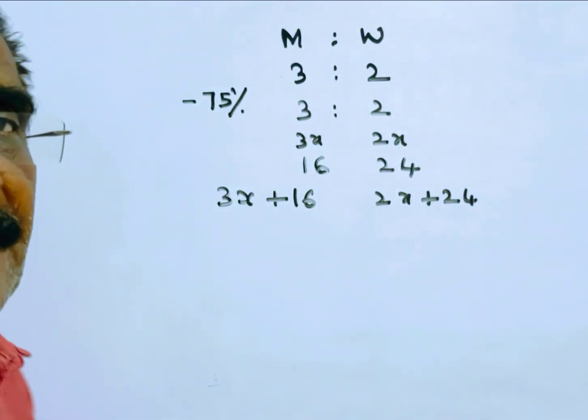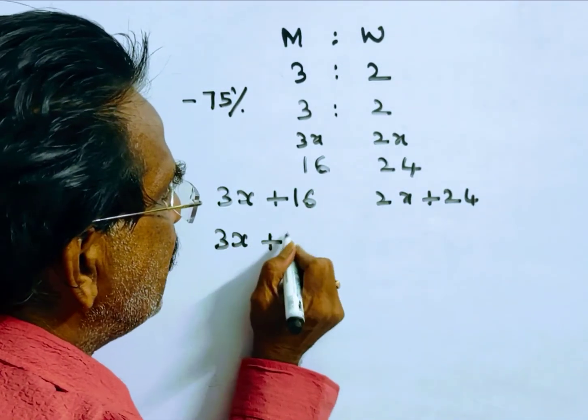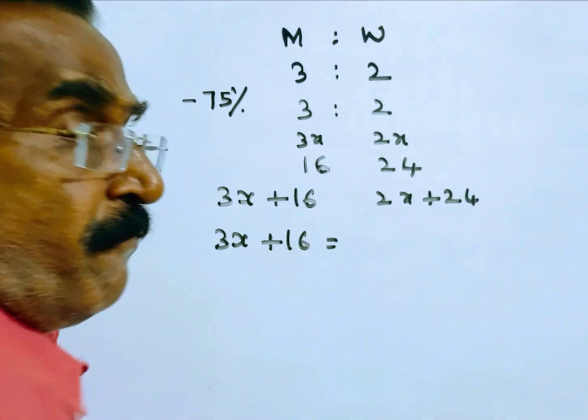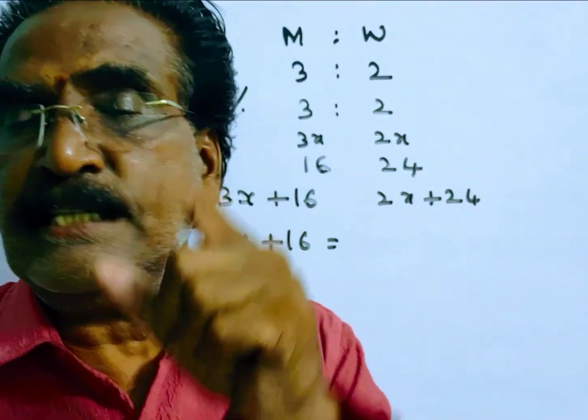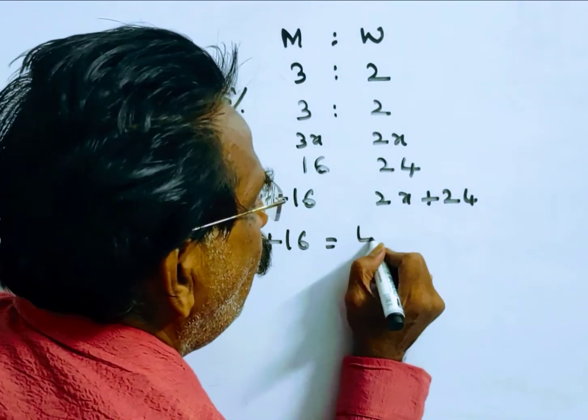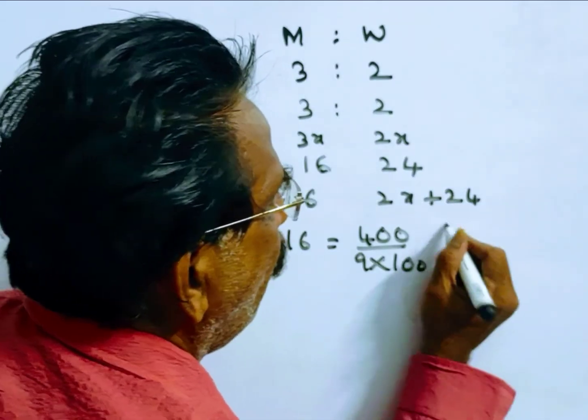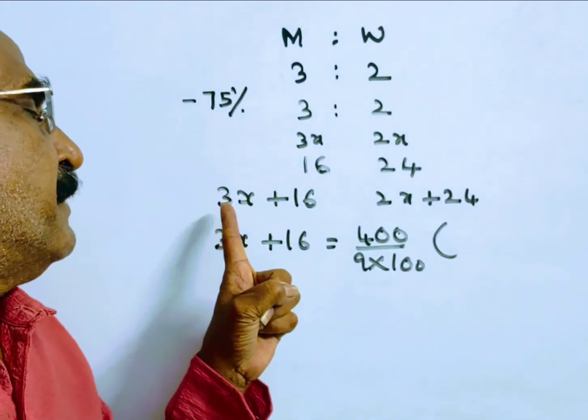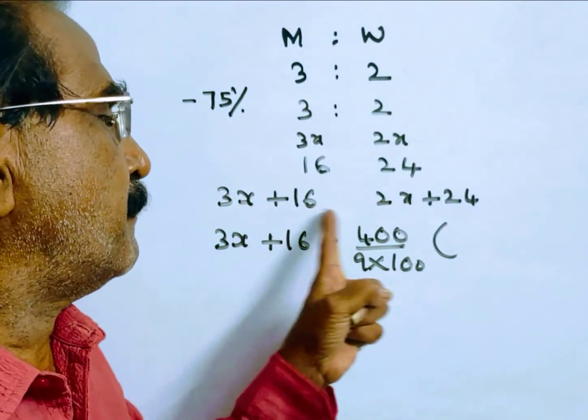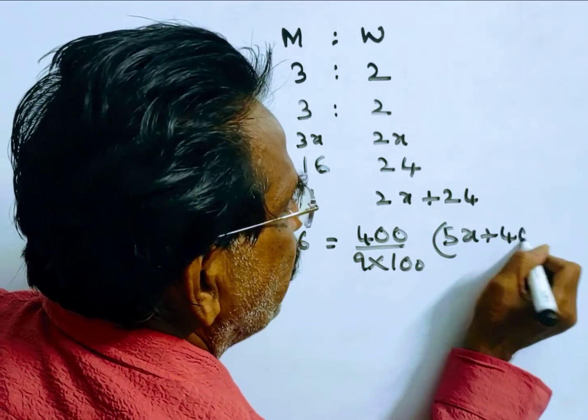Friends, it is given that after this operation milk is 44, 4 by 9 percent. Friends, 44, 4 by 9 percent means 400 by 9 percent of total mixture. 3x plus 2x is 5x plus 40.